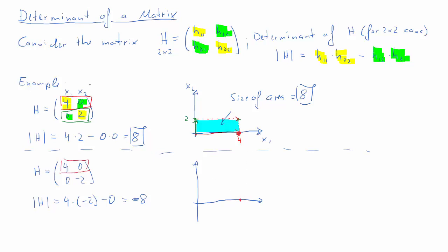So therefore, we already see the determinant isn't exactly the area of the parallelogram. So let's draw these two vectors again. The 4, 0 vector. So value of x1 of 4 and 0 of x2. And a 0, negative 2 vector. So we have negative 2 on the x2 axis and 0 on the x1 axis. So these are our two vectors.